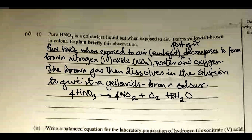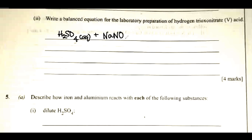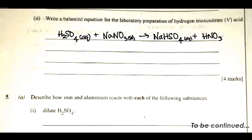The next question asks for a balanced equation for the laboratory preparation of HNO₃. HNO₃ is prepared in the laboratory from the action of concentrated H₂SO₄ on any nitrate(V) salt — commonly sodium nitrate or potassium nitrate. The equation is: H₂SO₄(aq) + NaNO₃(s) → NaHSO₄(aq) + HNO₃(g). The HNO₃ gas is then passed through a flask on which cold water is poured to condense it to liquid HNO₃.